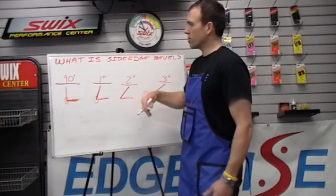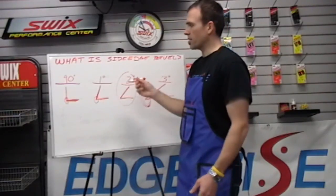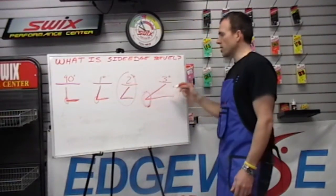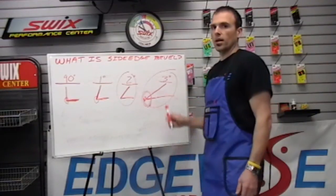So a good angle just for recreational skiing on the east coast is a 2 degree. It offers probably the best of durability and sharpness. But for ski racing, you're going to be up around the 3 degree angle for the edge hold on hard snow conditions.